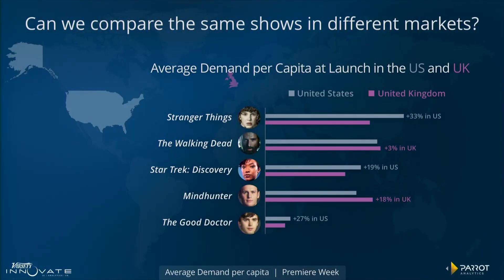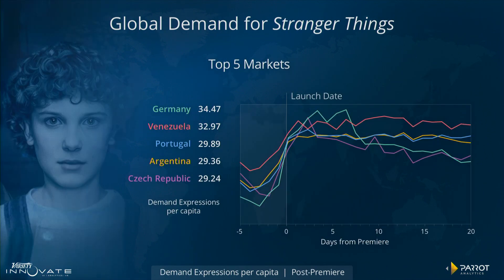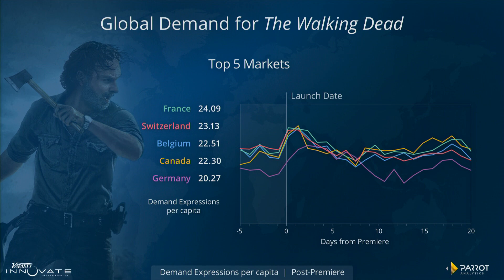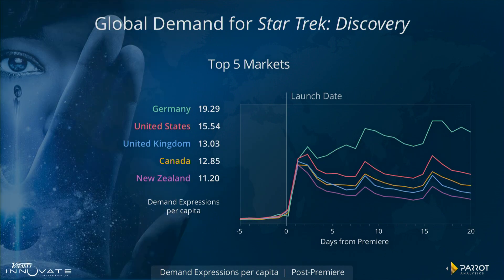With a global system, we can also do this in different countries. We can see that Stranger Things premiered to higher demand in the US, whereas Mindhunter premiered to higher demand in the UK. We can compare the demand for the same shows across different countries on a per capita basis. Venezuela had the highest demand for Stranger Things prior to its premiere and actually sustained demand for much longer than any other country after its premiere. For The Walking Dead, Germany got excited about the new season and then quickly lost interest. Meanwhile, Germany for Star Trek Discovery started at the same baseline level as other countries, but started taking a life of its own after the show started airing episodes.